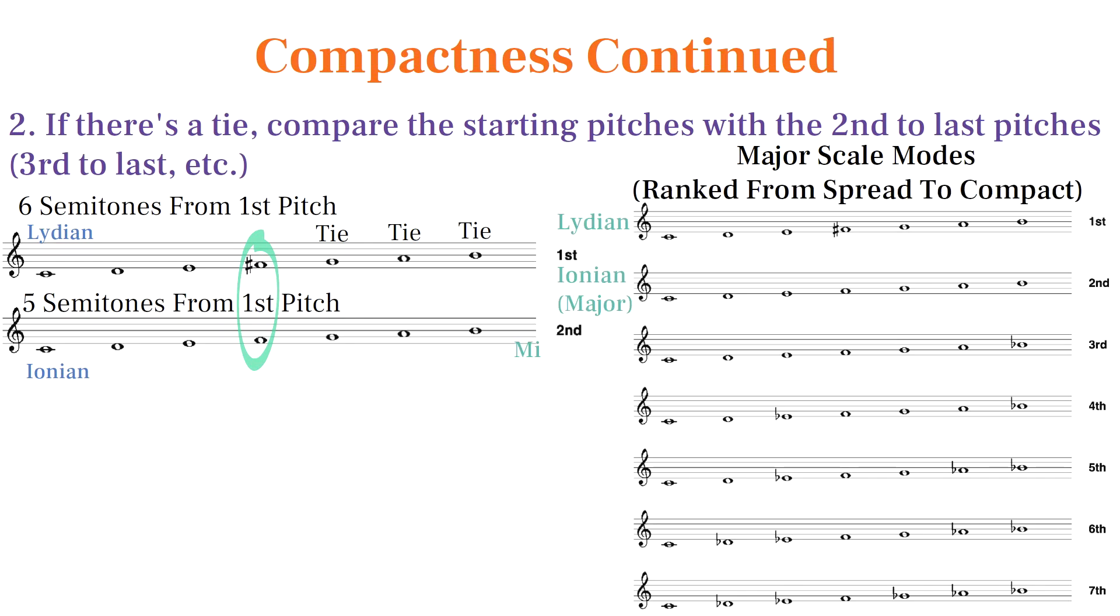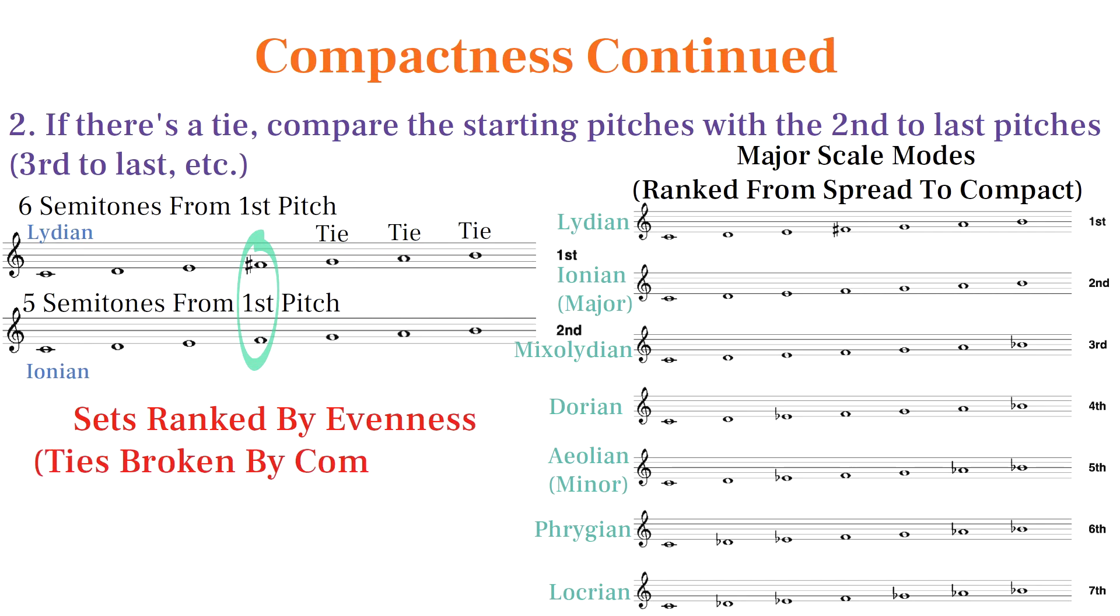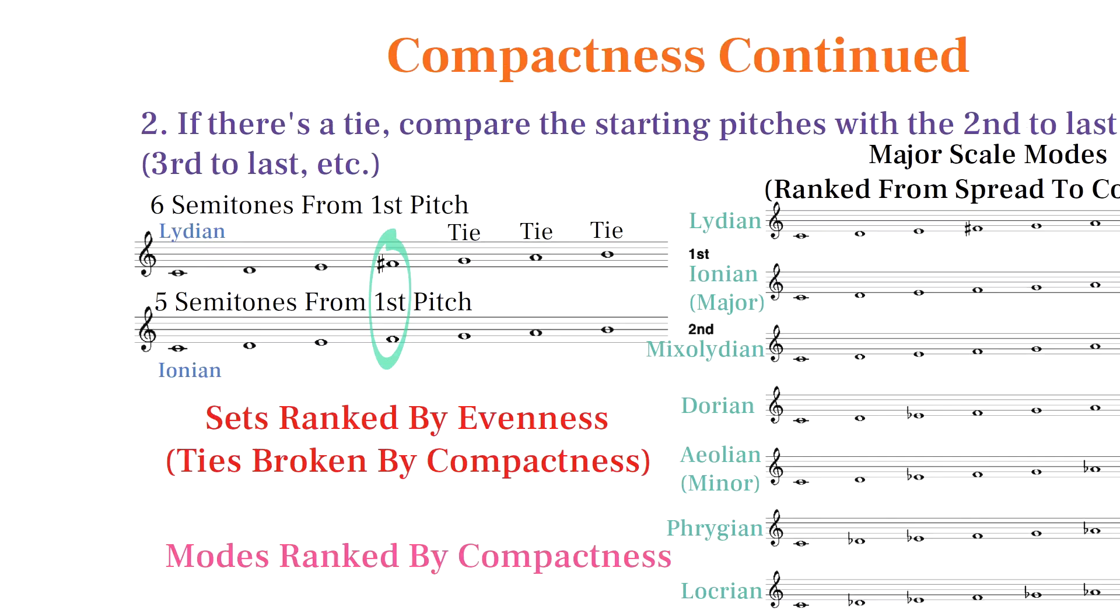The ordering of sets is usually determined by evenness, but when sets tie in evenness, the more spread out set is ranked ahead of more compact sets. When we rank all the modes of a single set, it's determined entirely by compactness.